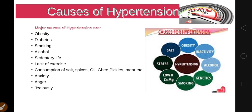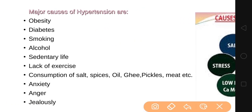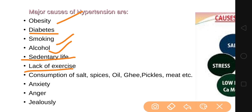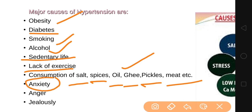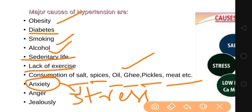The major causes of hypertension include obesity, diabetes, smoking, alcohol consumption, sedentary lifestyle and lack of exercise. Diet is also very important — consumption of excess salt, spices, oil, ghee, fats, pickles, and meat can all cause hypertension. Anxiety, stress, anger, and jealousy are also major contributors to hypertension.